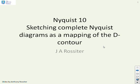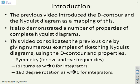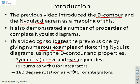This diagram gives examples of sketching complete Nyquist diagrams as a mapping of the D-Contour. The previous video introduced the D-Contour and demonstrated a number of properties. We want to consolidate that with numerical examples. Remember the key properties: symmetry for positive and negative frequencies about the real axis, right-hand turns as omega tends to zero for integrators, and 180-degree clockwise rotation around omega equals zero for integrators.